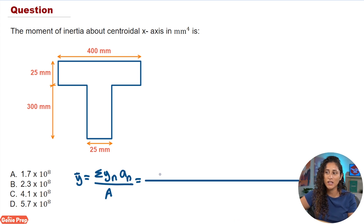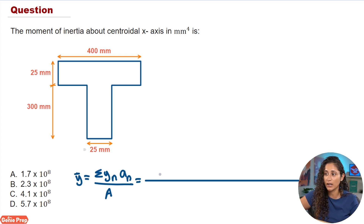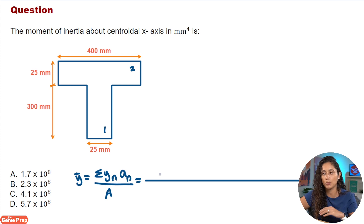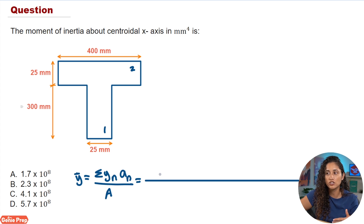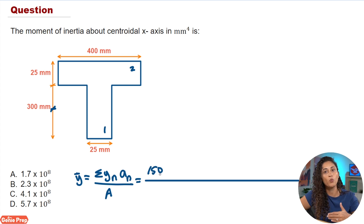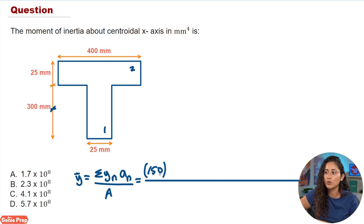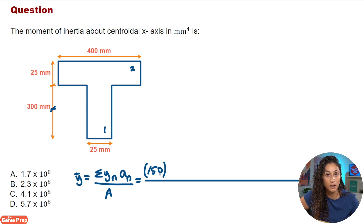The first thing we're going to do is find the centroid along the y-axis. We'll split this shape into two shapes: shape one and shape two. For shape one, y1 is just half of 300, which is 150 — that's the centroid of shape one. We multiply it by the area of shape one, which is a rectangle: b times h equals 25 times 300.